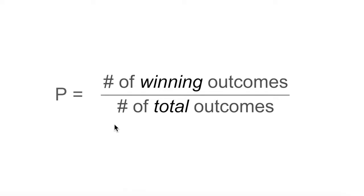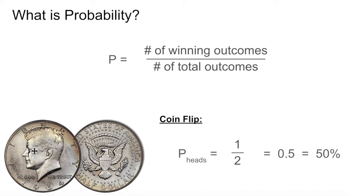Finding probability is very simple. It is the number of winning outcomes divided by the number of total outcomes, and you'll see exactly what I mean as we walk through some problems. So when we flip a coin, a coin has two sides, therefore there are two possible outcomes. The denominator here — the number of total outcomes — will always be two for a coin. It could either be heads or tails. But when you flip a coin, you have to call either heads or tails. So the probability of flipping heads is one-half. The number of winning outcomes is one, because there's only one side of the coin that has a head on it.